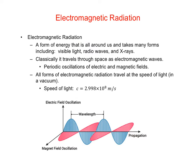So what is electromagnetic radiation? It's a form of energy that is all around us and takes many forms including visible light, radio waves, X-rays, and microwaves. All electromagnetic radiation travels through space as electromagnetic waves. These are periodic oscillations of electric and magnetic fields that are perpendicular to one another, and you can see a diagram of that on the bottom.